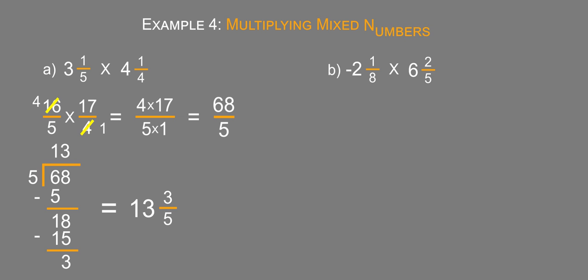Moving on to part B, we have a negative value with our first mixed number. We want to recognize that a negative times a positive is going to be a negative. We'll write this as an improper fraction. Eight times two is 16 plus one is 17, so this is -17/8 times, and six times five is 30 plus two is 32, so that's 32/5.